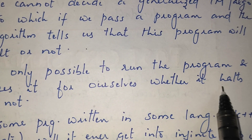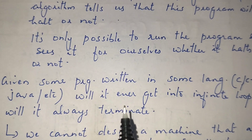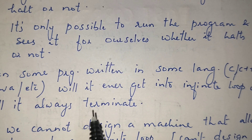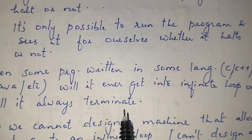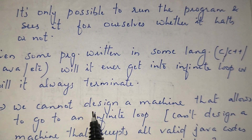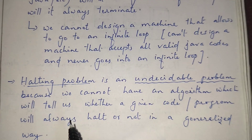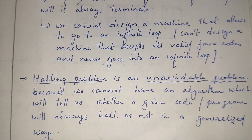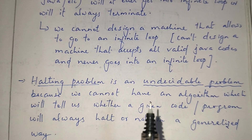We know from programming that when executing a program, it may go into an infinite loop or it may terminate and give output. We cannot design a machine that will always determine this in advance. That is the halting problem — it is undecidable because we cannot have an algorithm that will tell us, in a generalized way, whether a program will always halt or not.